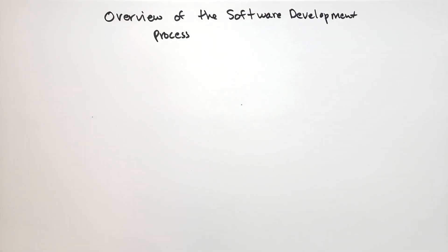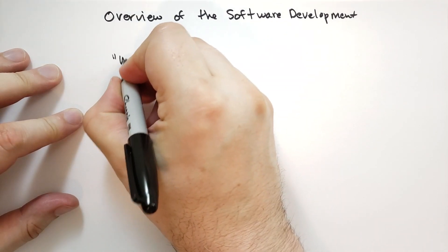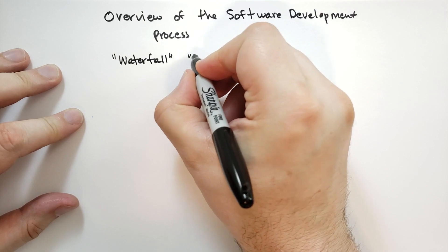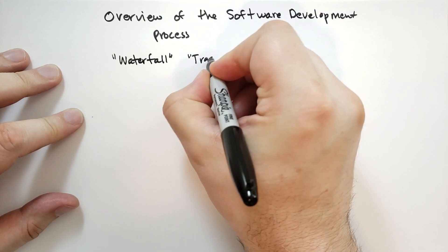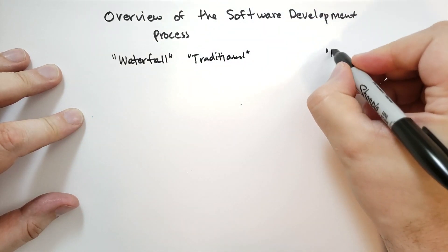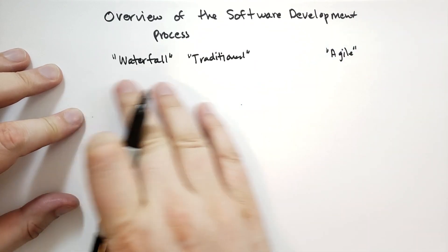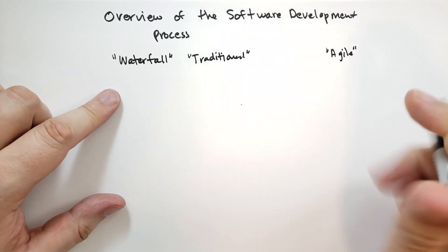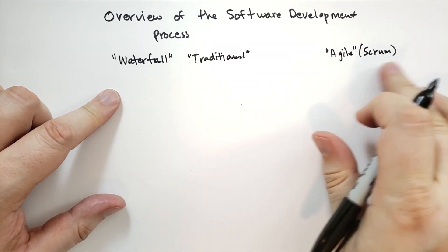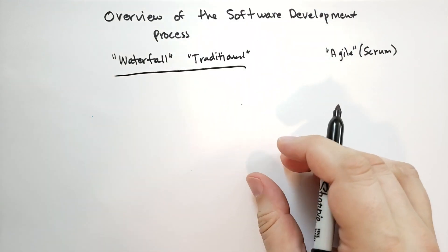There are basically two models that people follow. One is called the waterfall — also called traditional — and then the other is called agile. I'm going to cover really high level what these things are. You're going to hear the word 'scrum' when people are talking about agile. So, what is waterfall? What is the traditional method?